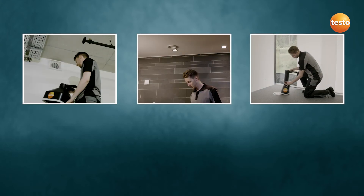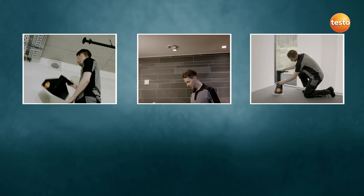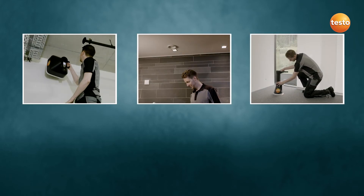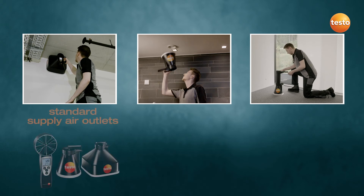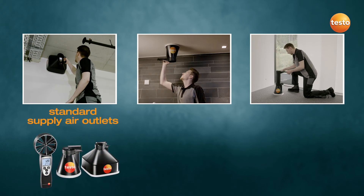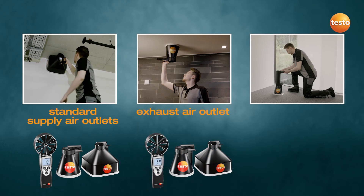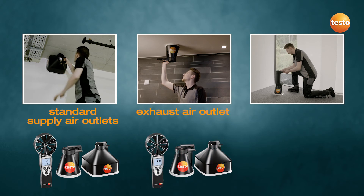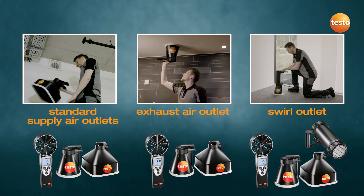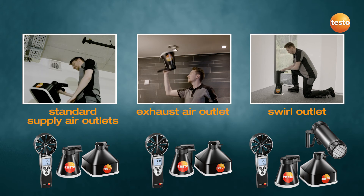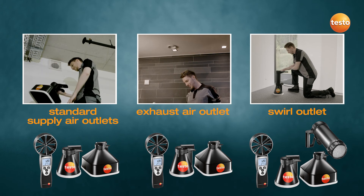Let's summarize which measuring tasks you can carry out with the Testo 417. First: measure faster at standard supply air outlets. Second: achieve accurate values at exhaust air outlets. Third: achieve utmost accuracy at swirl outlets, even with turbulent airflow.